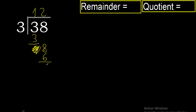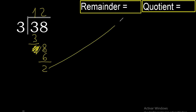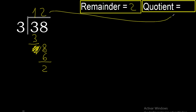8 minus 6 is 2. There is no number that goes down, therefore finish. The remainder is 2, and the answer is 12.